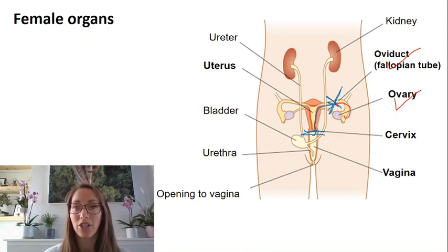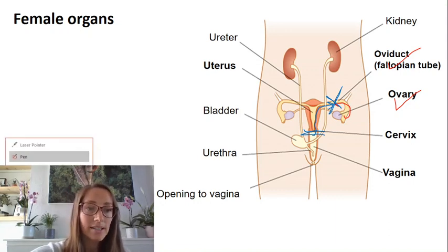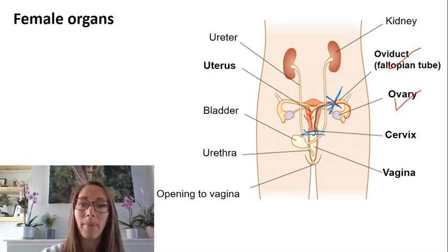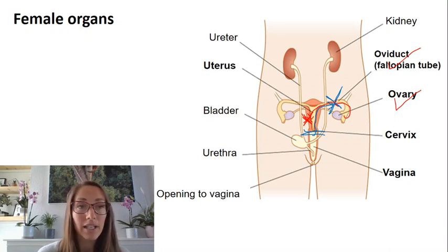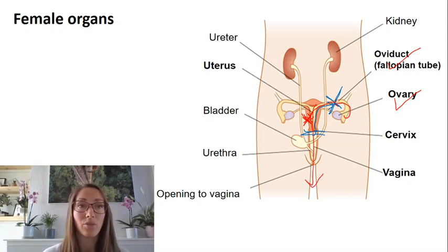We'll cover fertilization in the next session. If there is fertilization, the zygote can travel down into the uterus where it will embed in the vascular layer of the wall — the endometrium. If there is no fertilization, the secondary oocyte will not finish meiosis and will just be released out of the body during the menstrual cycle, or during a period.